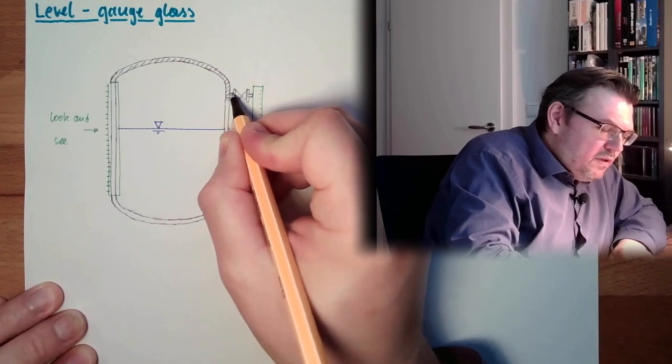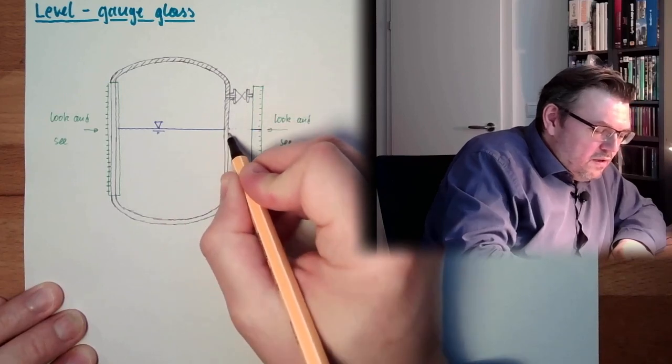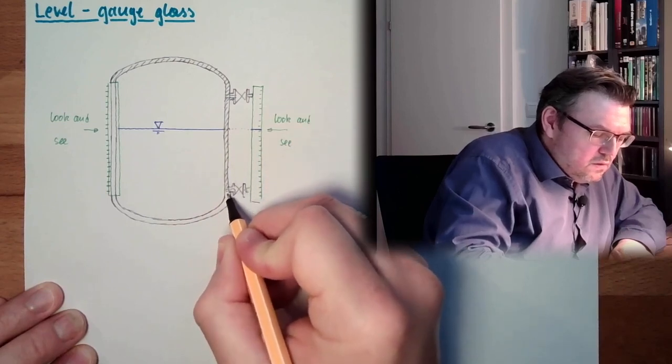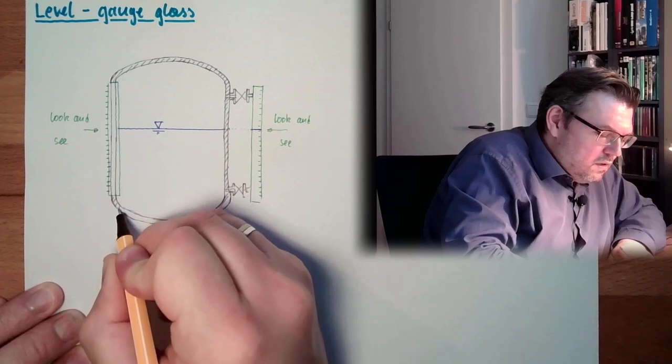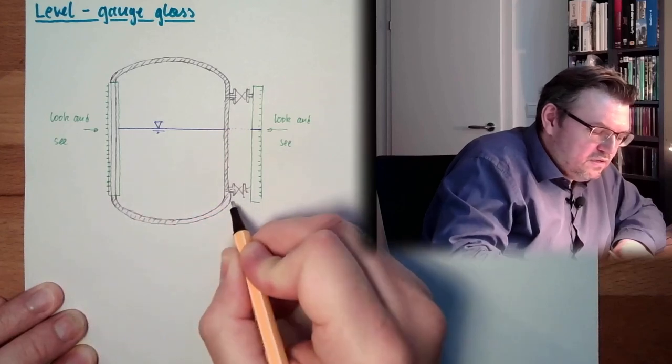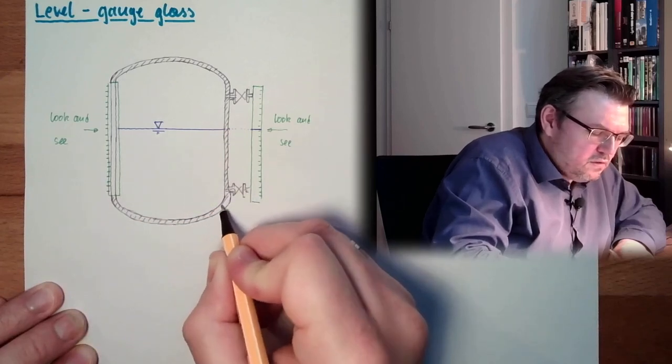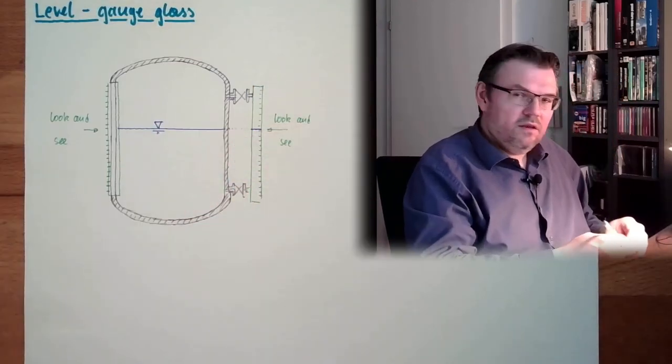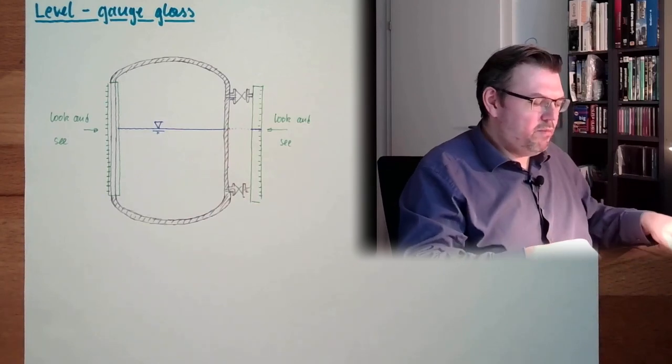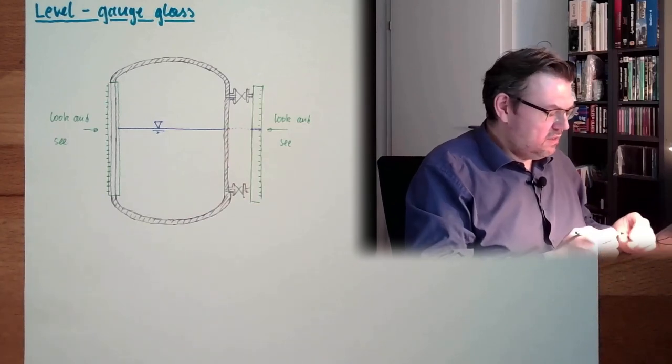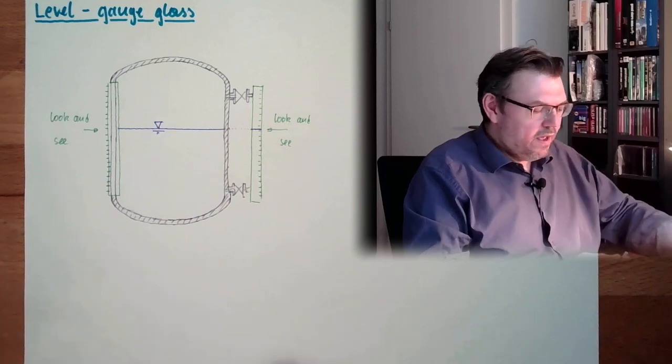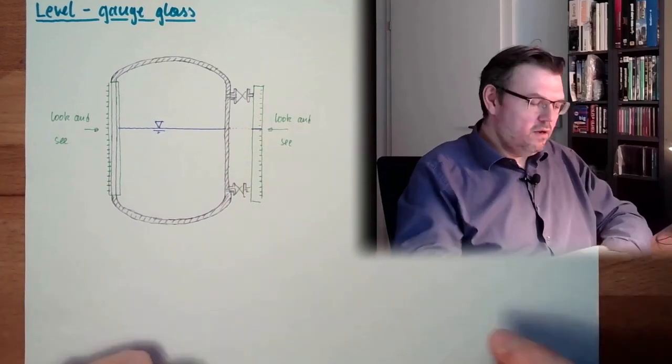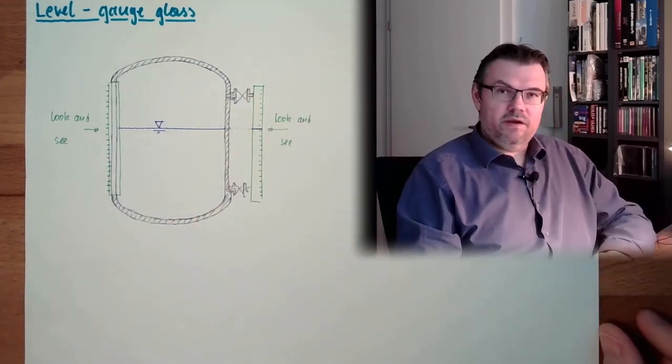If you have two flanges and build it externally, then you could replace the glass easily. Because if this is broken for whatever reason, then you could just close this. Then you could run your application further without this looking glass. And then you can mount a replacement part, open the two valves, and you are again ready to go.